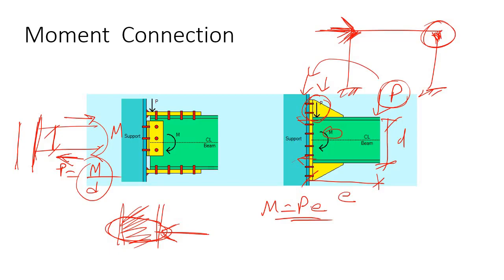You have to check this column web, whether it is sufficiently strong or not to carry this push forces or compressive forces. If it is not sufficient enough, in that case you have to provide some doubler plate here to increase the thickness of the web of the column. So that's all about moment connection.